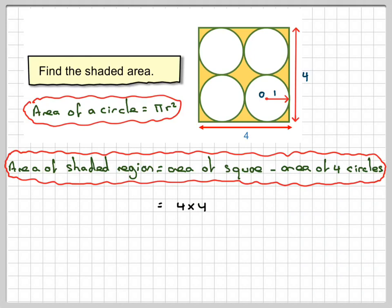And therefore, the required area will be four times four, the area of the square, minus four times π times the radius squared. This is four times the area of one of these circles. Each one of these has a radius of one, so it's π times one squared.